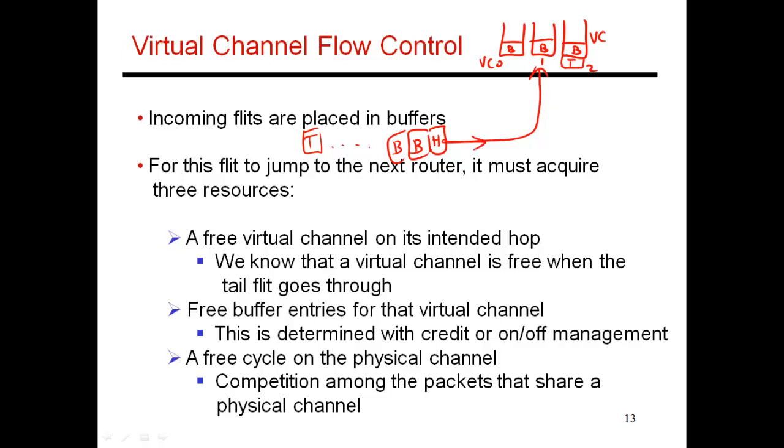So this packet that is trying to go across demands the arbiter that it be granted a virtual channel. Once the tail flit is sent, you know that one packet has finished its transmission. So virtual channel 2 is now ready to receive a new packet. So the arbiter maybe grants it to this packet. So then the head flit goes along and puts itself into this virtual channel 2. So there's some state being kept over here saying that this packet has been assigned to virtual channel 2. So now when these body flits go across, they also carry that same ID.